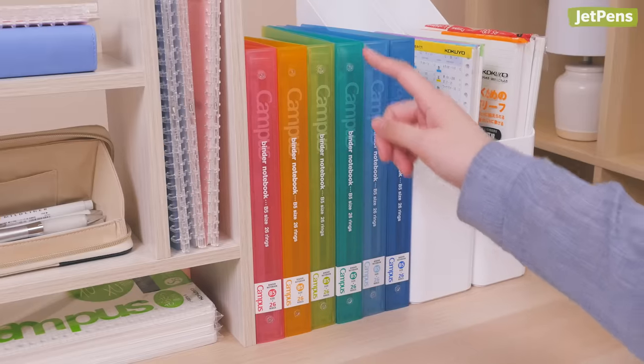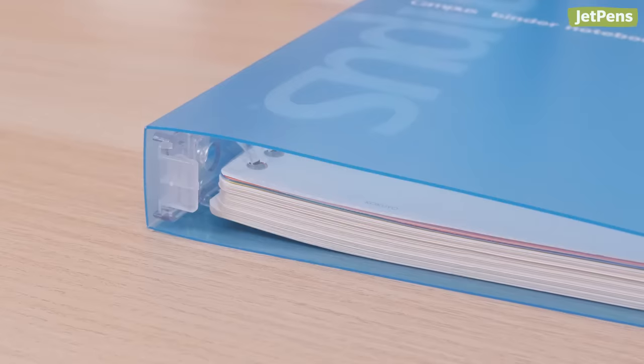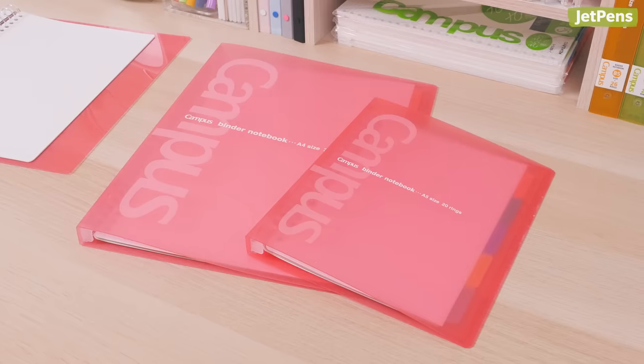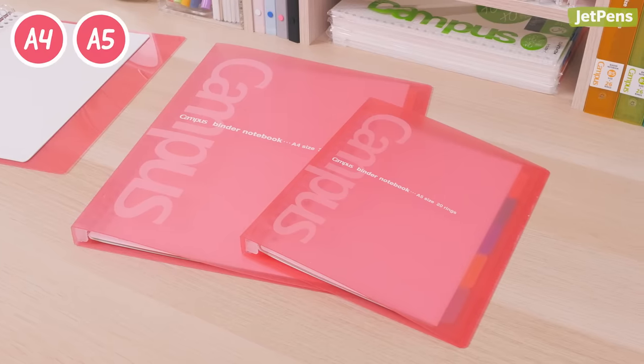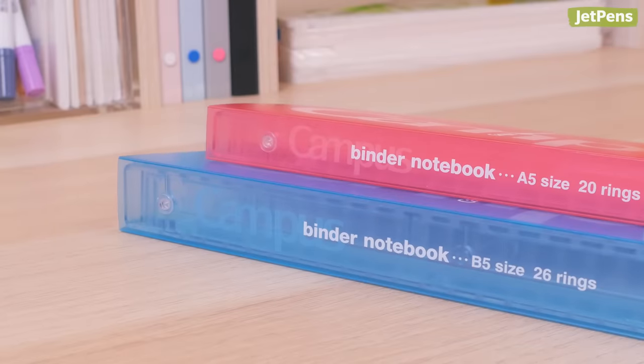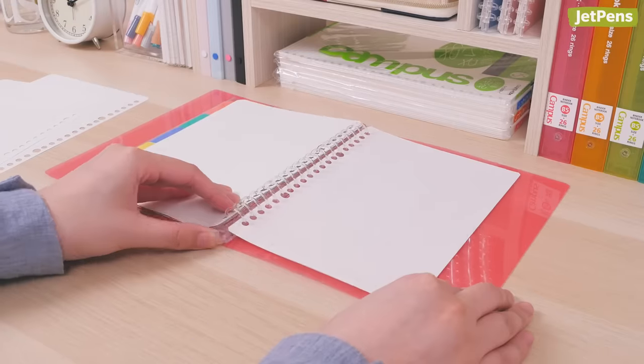The middle binders are B5-sized and can hold up to 100 sheets, so they have plenty of room for your notes. The slim binders come in your choice of A4 and A5 sizes. They're slimmer than the middle version and can carry up to 65 sheets.